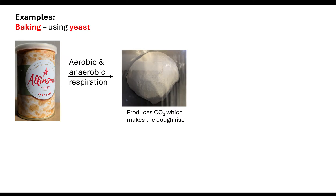Where does the carbon dioxide come from? In aerobic respiration it comes from the decarboxylation in the link reaction and the decarboxylation in the Krebs cycle. In anaerobic respiration it comes from ethanol fermentation — specifically the decarboxylation when pyruvate is converted into ethanol. This is where they link this topic to your module 5 respiration content.